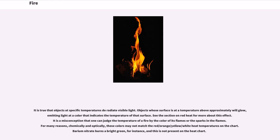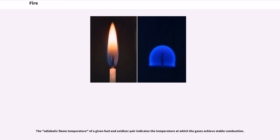these colors may not match the red-orange-yellow-white heat temperatures on the chart. Barium nitrate burns a bright green, for instance, and this is not present on the heat chart. The adiabatic flame temperature of a given fuel and oxidizer pair indicates the temperature at which the gases achieve stable combustion.